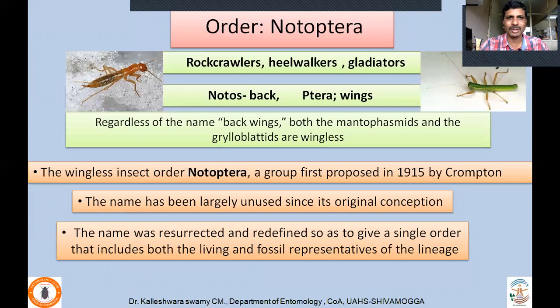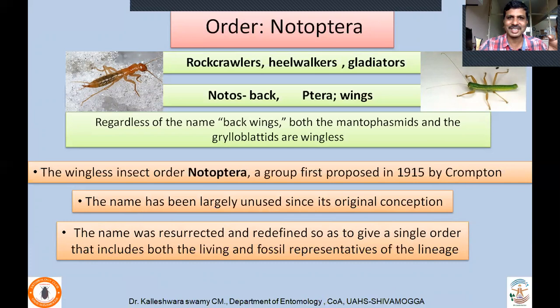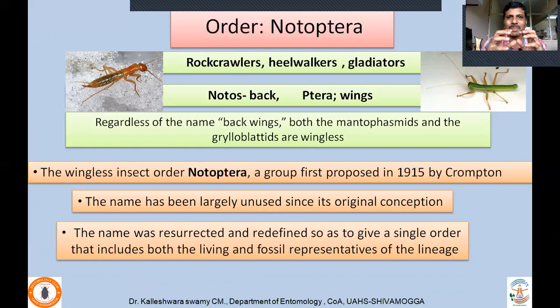Next order: Notoptera. Commonly called rock crawlers, heel walkers, and gladiators. The order Notoptera was proposed as early as 1915 by Crampton, but was largely unused since then. Recent researchers demonstrated that Grylloblattodea (rock crawlers) and Mantophasmatodea (gladiators) are not separate orders but belong to the same sister groups. Hence, Notoptera was retained, and both Grylloblattodea and Mantophasmatodea are now considered at the family level.